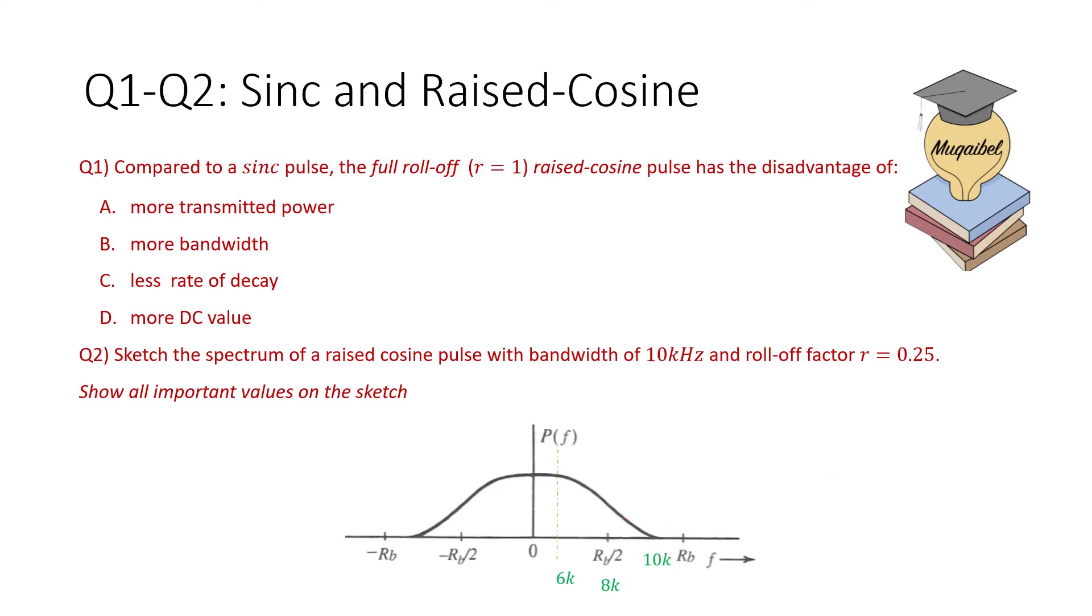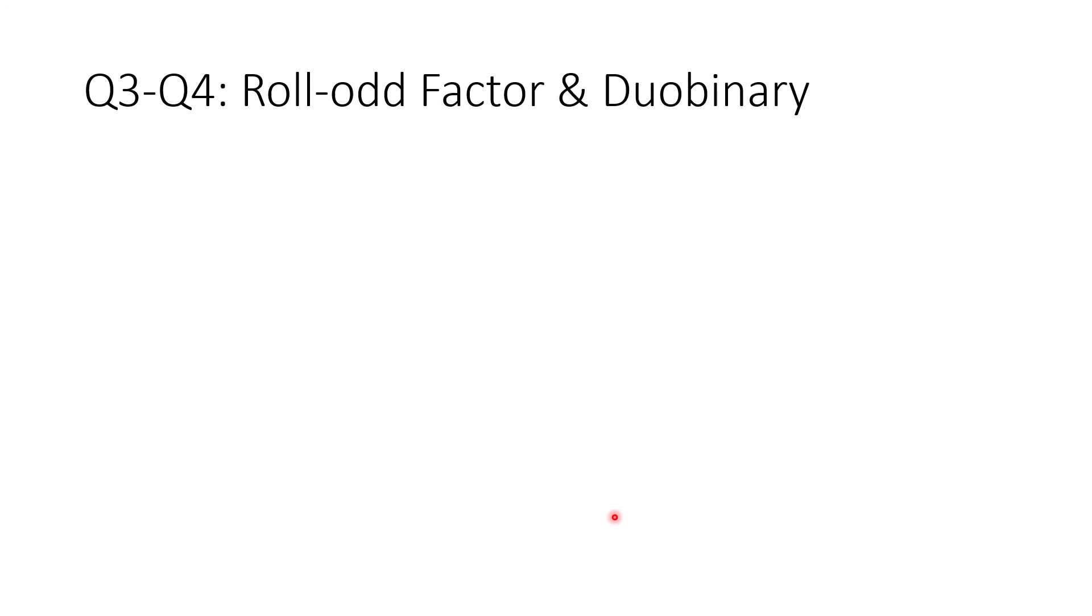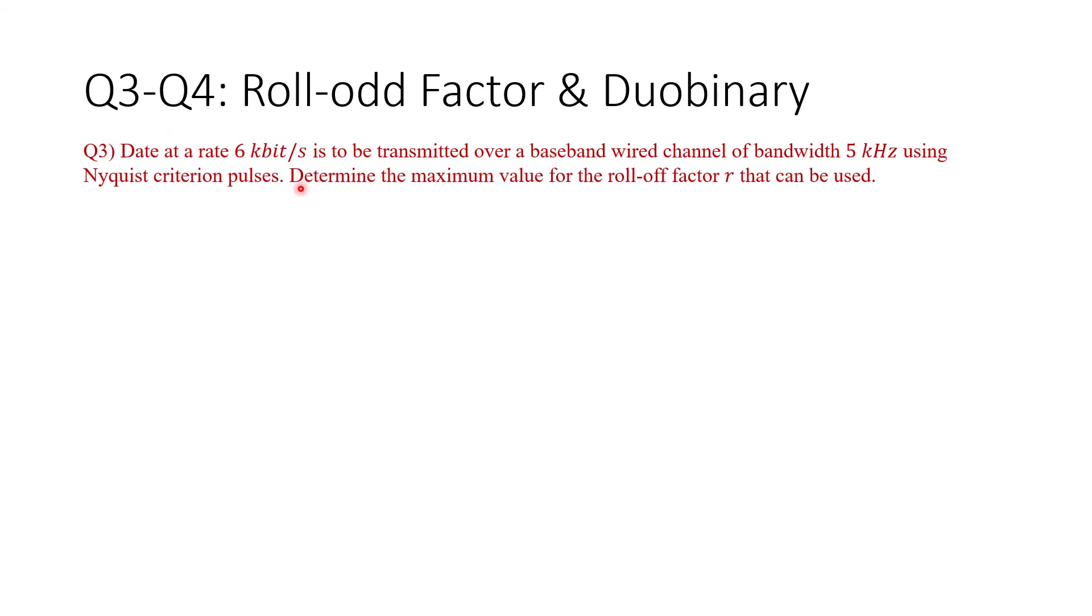Now let's move to question three and four. The third question says: data at a rate of 6 kbps is to be transmitted over a baseband wired channel of bandwidth 5 kHz using Nyquist criterion pulses. Determine the maximum value for the roll-off factor R that can be used. So we need a formula that relates bandwidth, rate, and roll-off factor in baseband communication. You can pause the video and take about two to three minutes to find the answer.